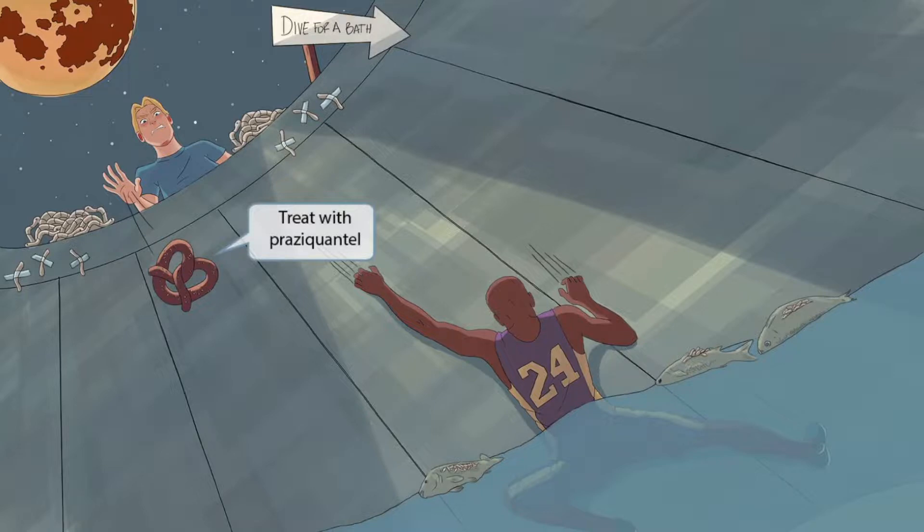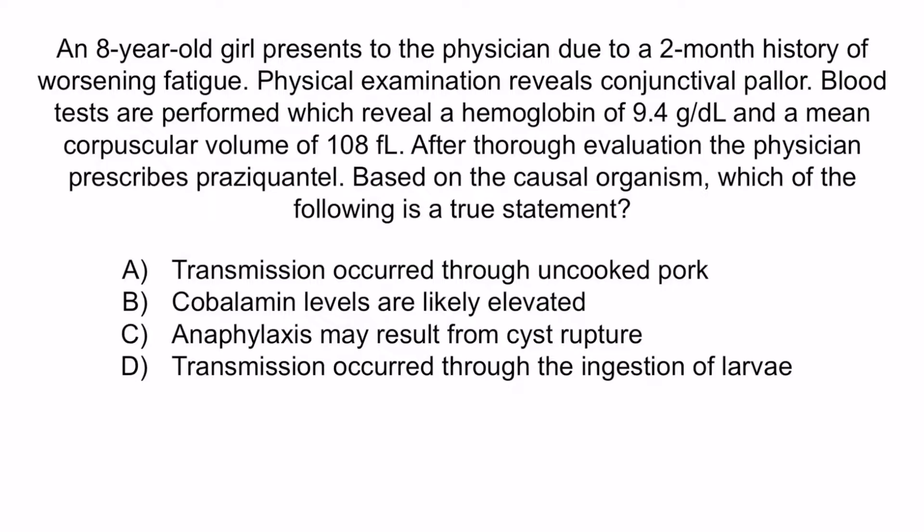Now let's review with a question. An eight-year-old girl presents to the physician due to a two-month history of worsening fatigue. Physical examination reveals conjunctival pallor. Blood tests reveal a hemoglobin of 9.4 grams per deciliter and a mean corpuscular volume of 108 femtoliters. After thorough evaluation, the physician prescribes praziquantel. Based on the causal organism, which of the following is a true statement? A: Transmission occurred through uncooked pork. B: Cobalamin levels are likely elevated. C: Anaphylaxis may result from cyst rupture. Or D: Transmission occurred through the ingestion of larvae.